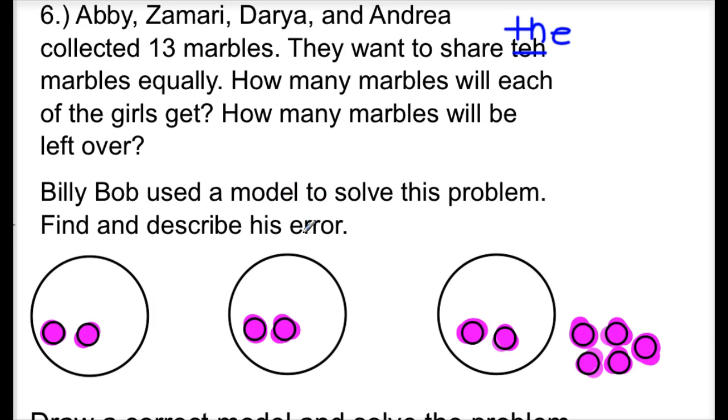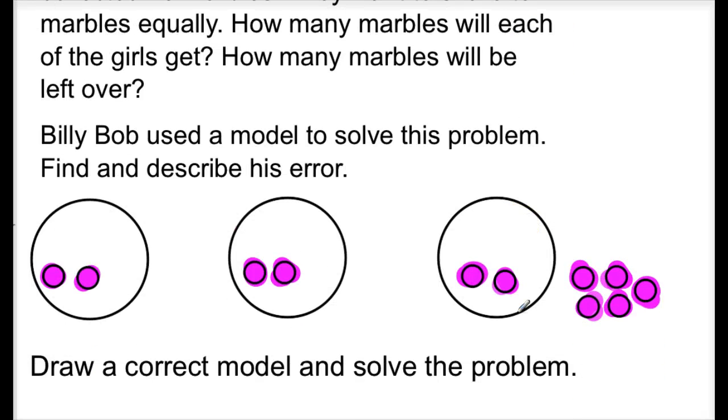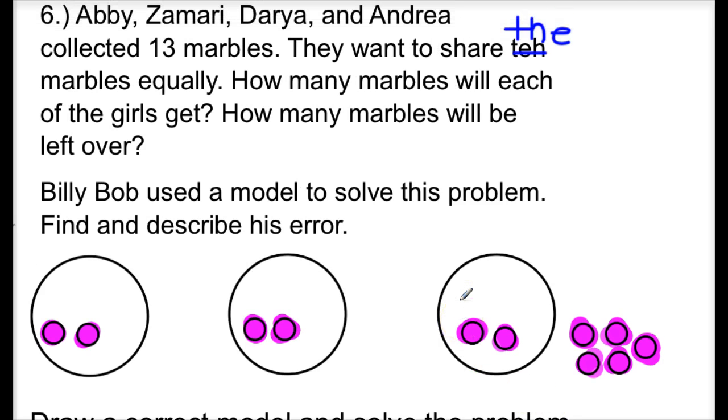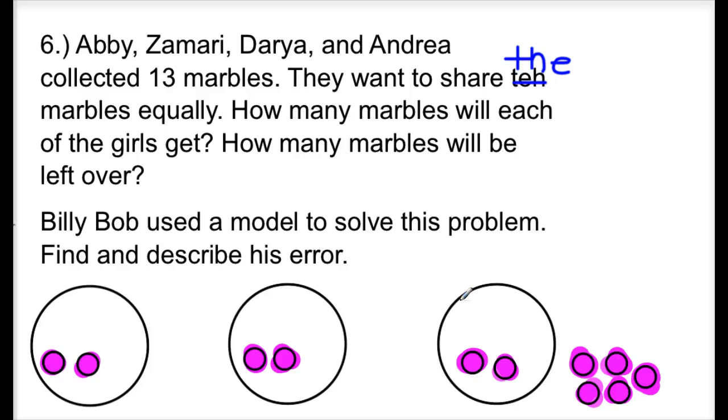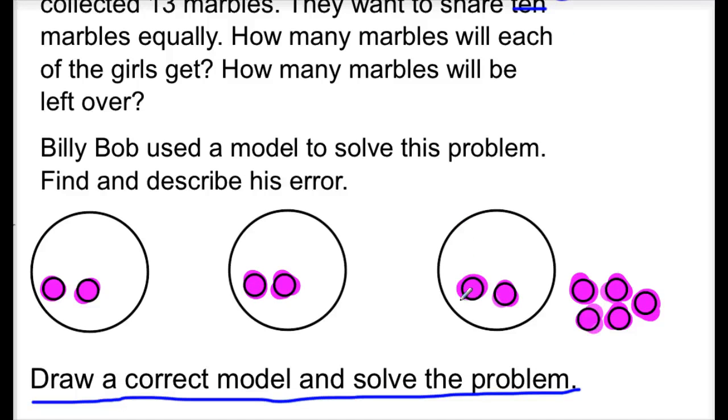So Billy Bob is going to attempt to solve this problem, and here's his work. This is his model right here for this problem. I would like for you to find and describe his error. What is wrong about this? Write that down in your journal. After you have done that, I would like for you to then draw a correct model and solve the problem yourself, and see what you come up with. So that is what I would like for you to work on for problem number 6. So you need to read the problem again, look at Billy Bob's model, find and describe his error, and then you complete the problem and solve it with a model yourself.